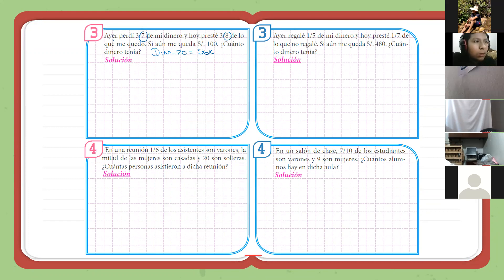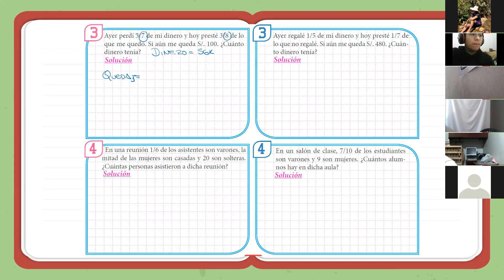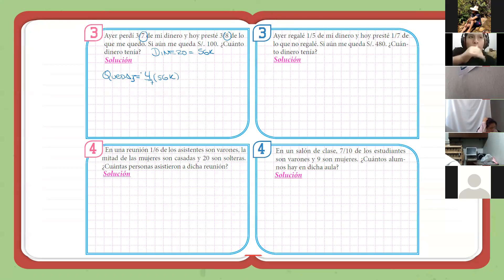Vamos a empezar a trabajar. Dice: perdí tres séptimos de mi dinero. Si perdí tres séptimos, ¿cuánto me queda? Me quedaría el complemento: cuatro séptimos de 56K es lo que me queda en la primera parte. ¿Todo claro?